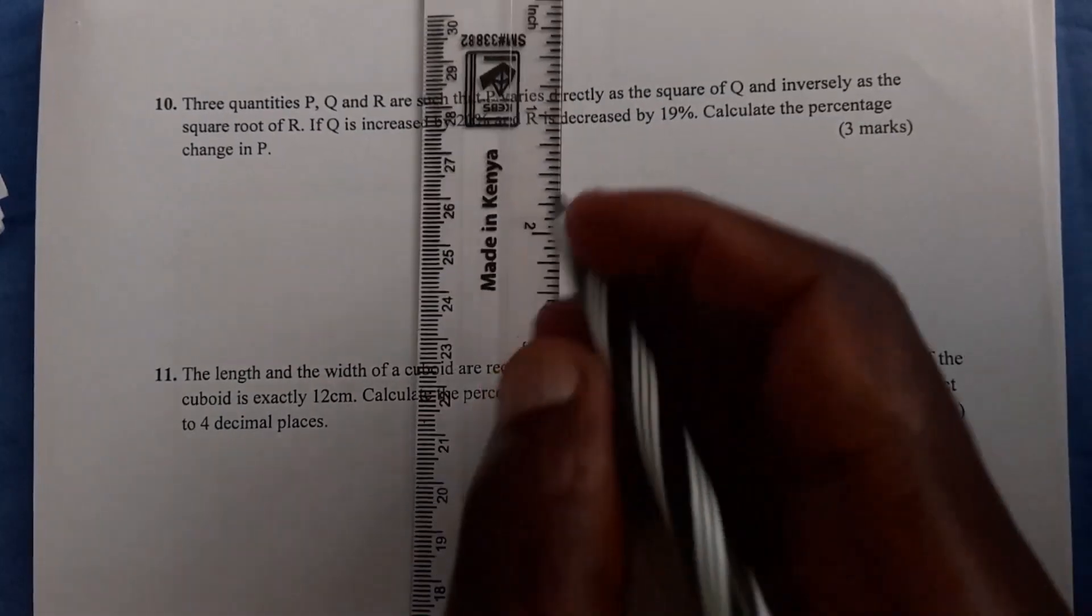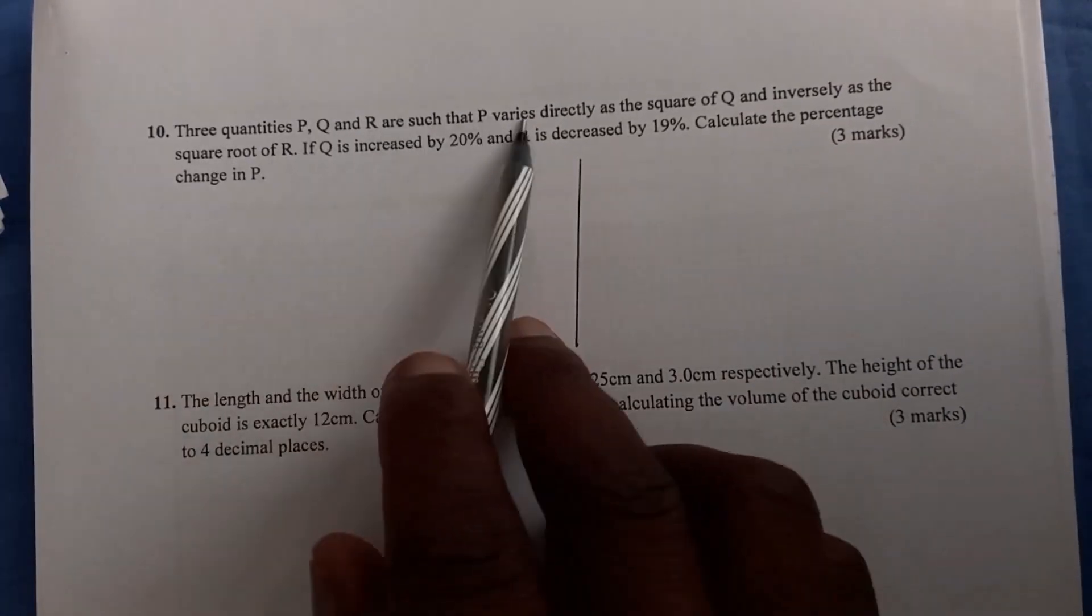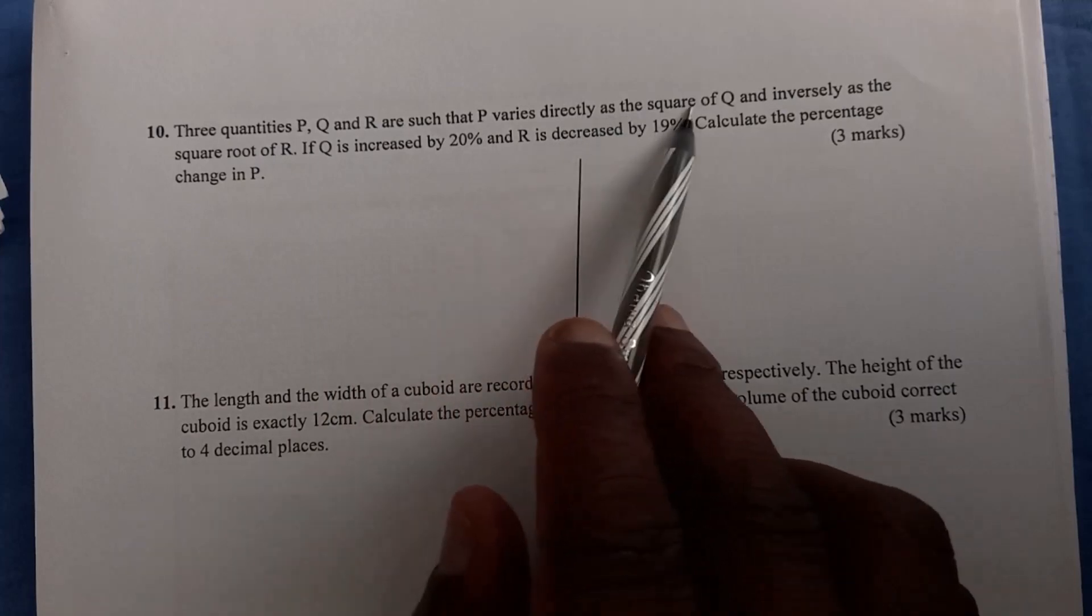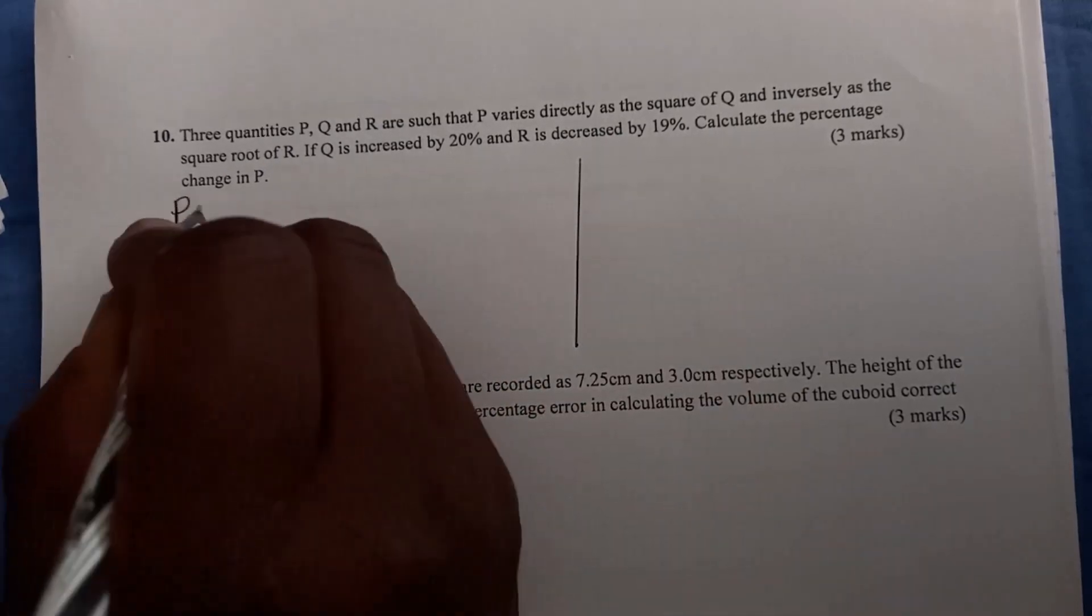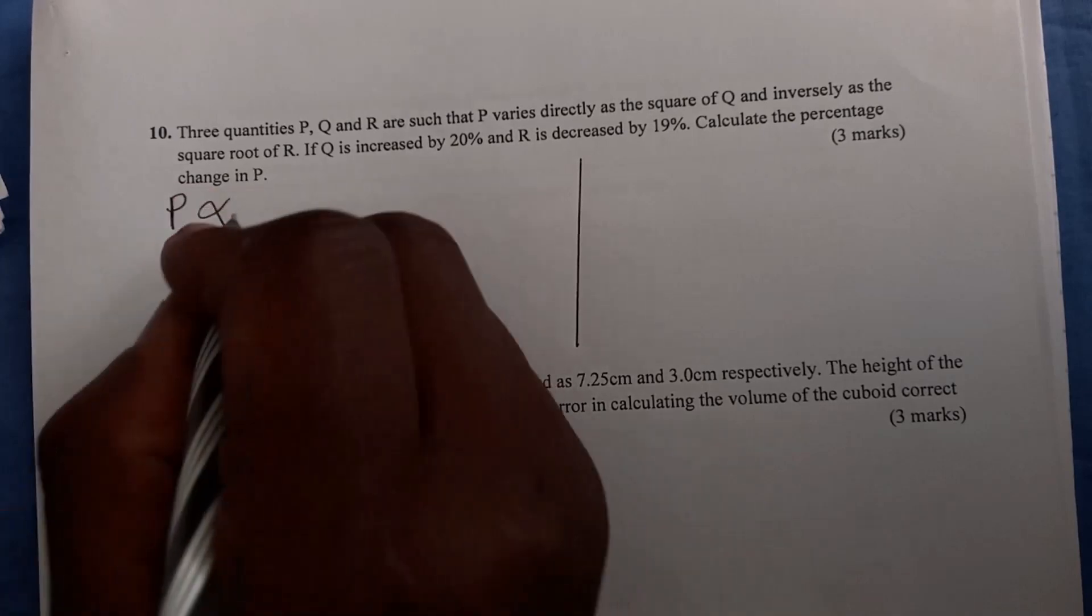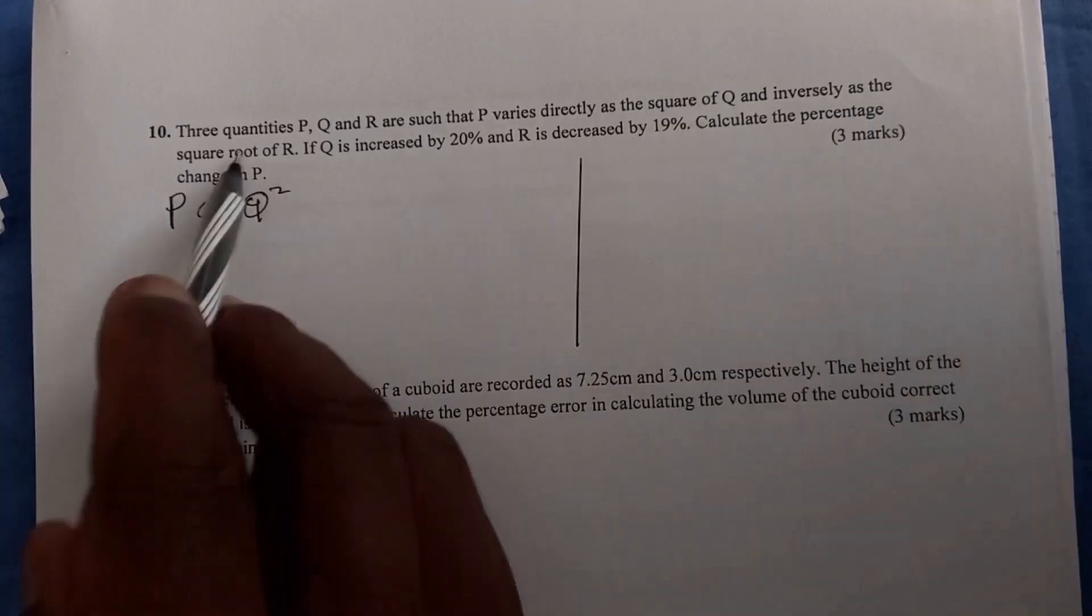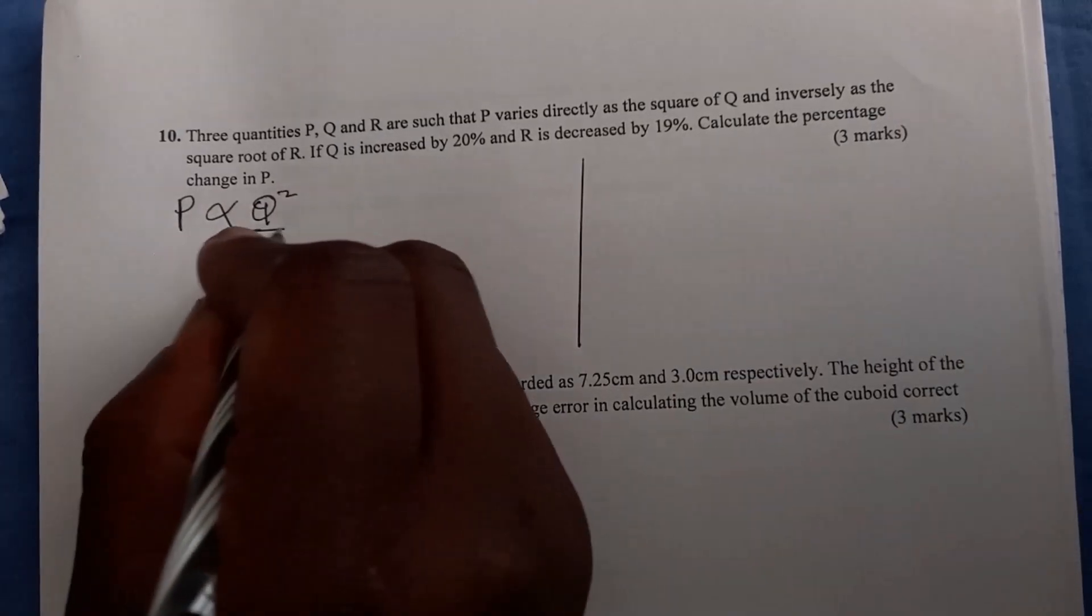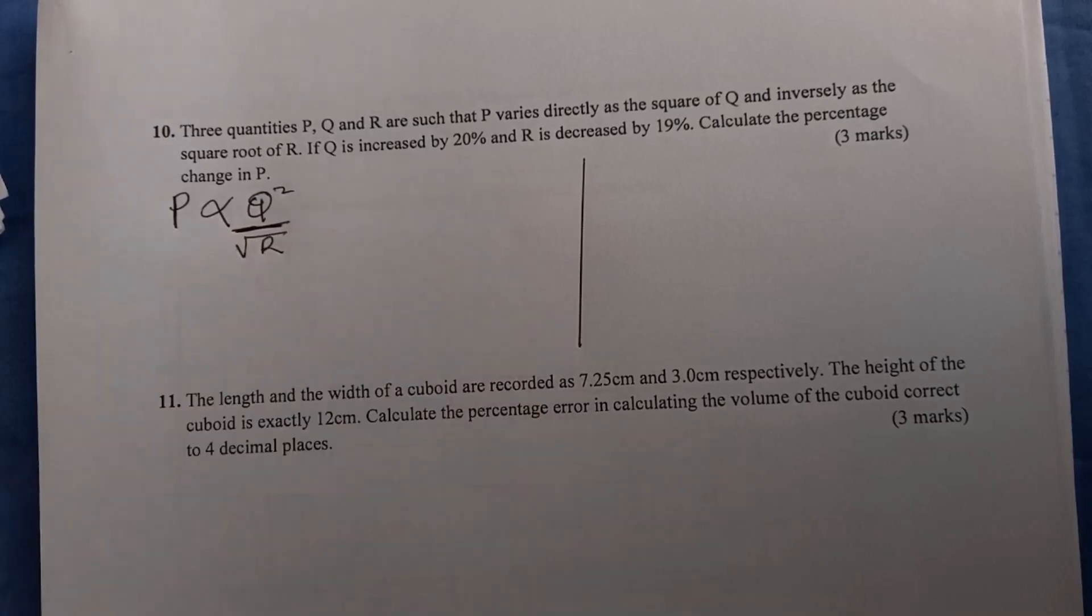The first thing you're going to do is write this connection. P varies directly as the square of Q, so P varies - this is the sign of proportionality - directly as Q squared, and inversely as the square root of R. You put the division sign here, square root of R. That is how you write it.